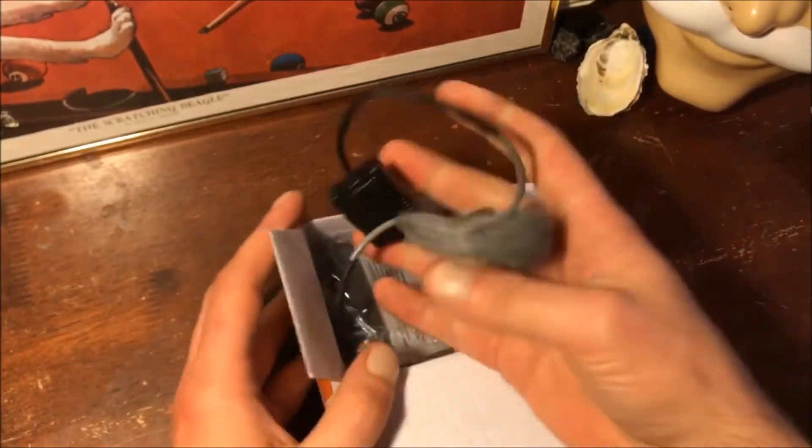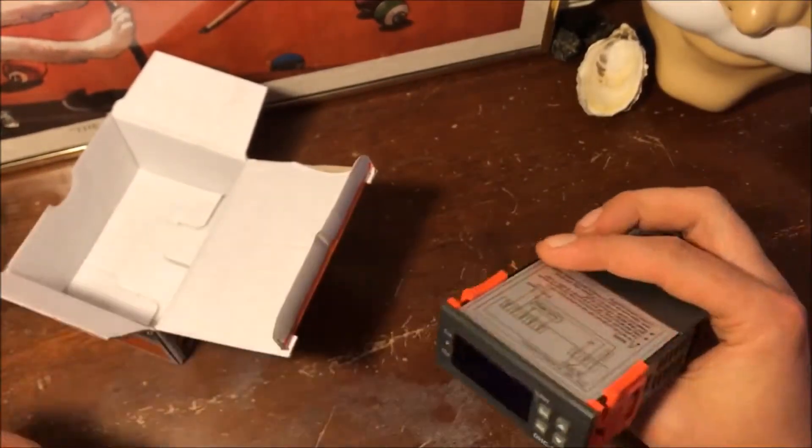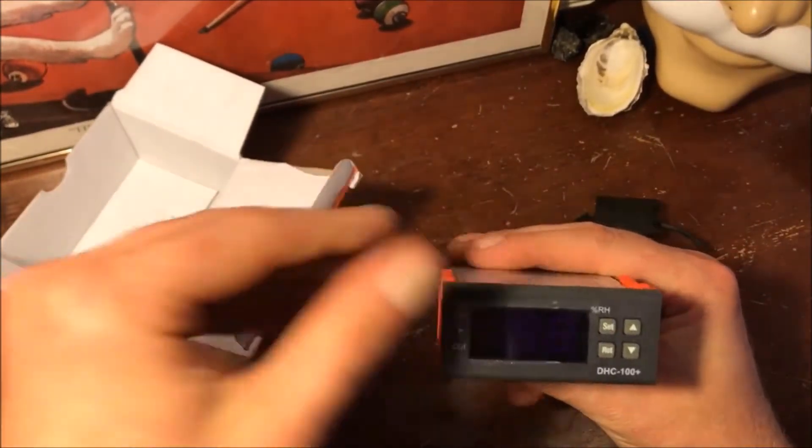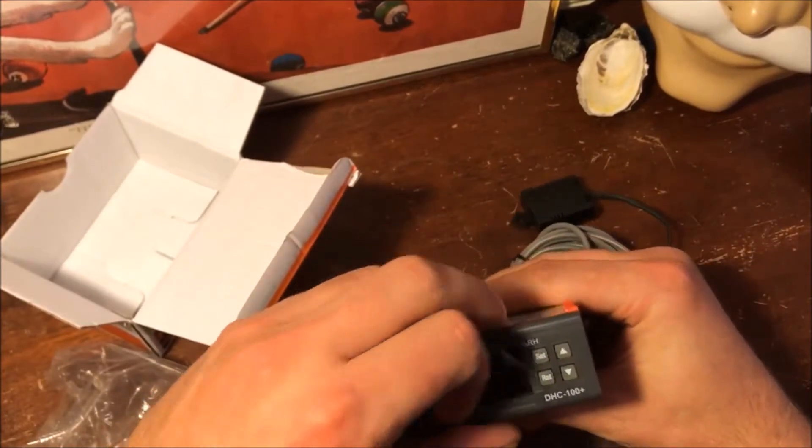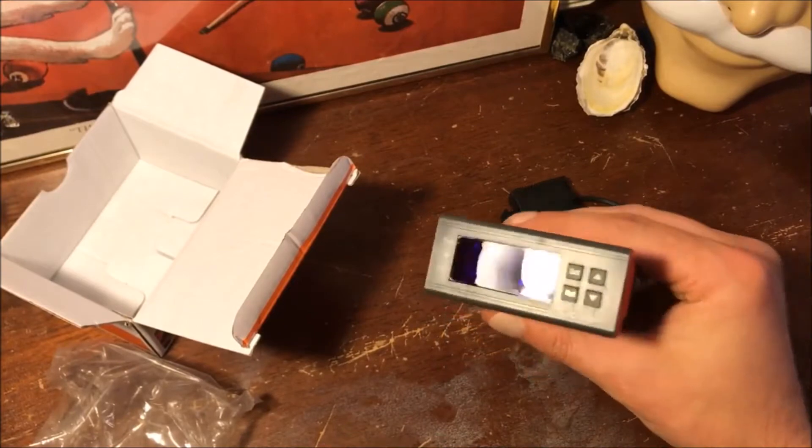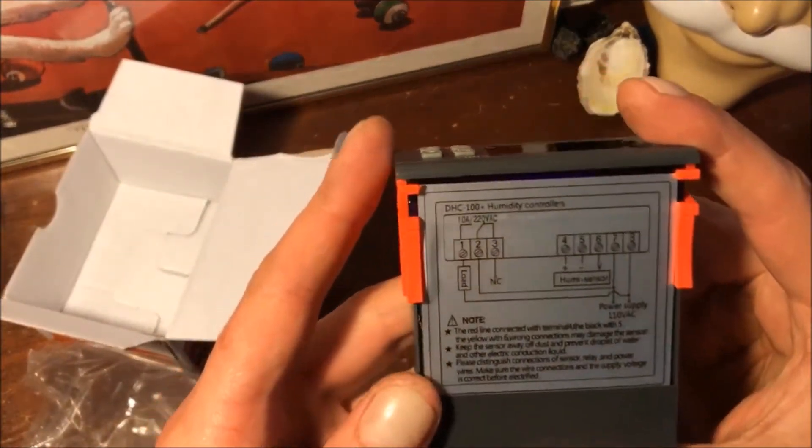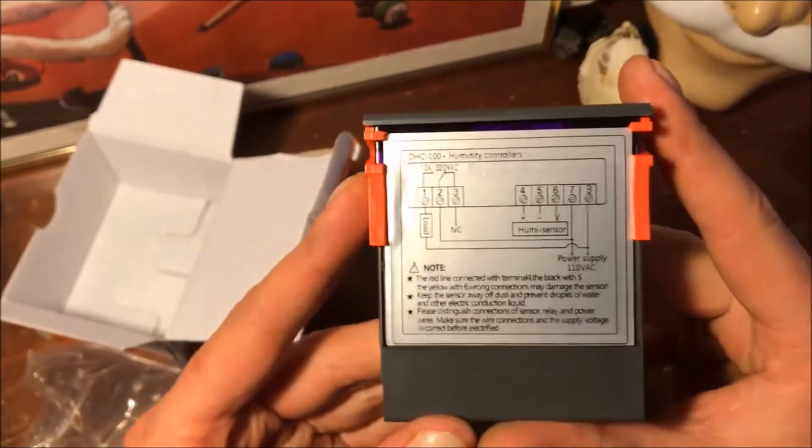Okay, so it looks just like the temperature controller I got before, but it says percent relative humidity, so I'm guessing it's okay. Let's see what it says. Yeah, DHC-100 plus is the model.